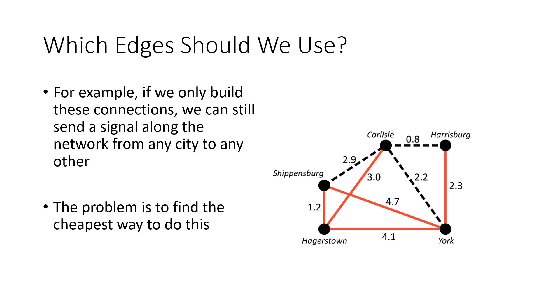For example, if I just build these ones that I've colored in red, in other words, if I don't build the dashed lines, then we can see that we can still get from every city to every other city. So for example, if I wanted to get from Carlisle to Harrisburg, I don't have this direct connection. But I can go from Carlisle directly to Hagerstown, and then from Hagerstown to York, and then from York up to Harrisburg. So that might be inefficient, but it's a way for me to get from each town to every other town.